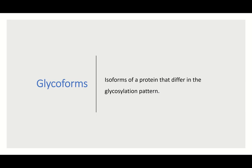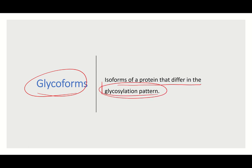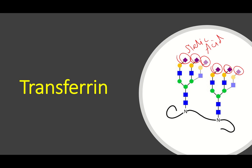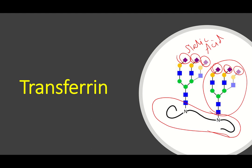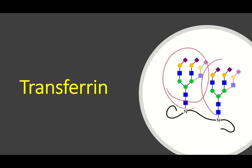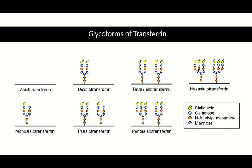You should understand the term glycoforms. Glycoforms are isoforms of a protein that differ just by the glycosylation pattern — the protein portion is the same, but the pattern of the oligosaccharide chain is different. These are the glycoforms of transferrin: the protein part is the same; what differs is the number and pattern of oligosaccharides.